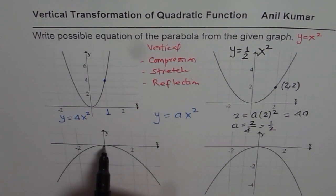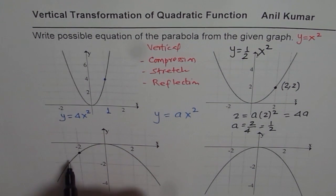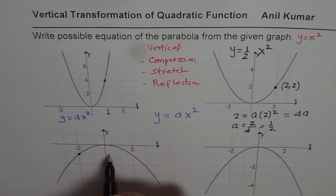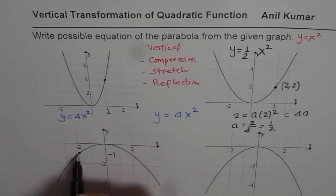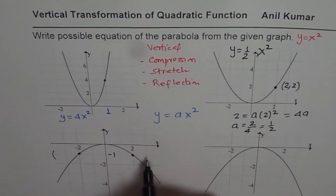Now, here, this parabola, a good point to look is minus 2. At minus 2, we get minus 1 as the value. This coordinate point, you could have selected that one also.